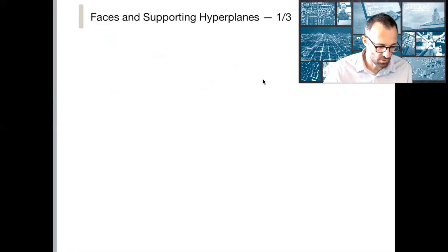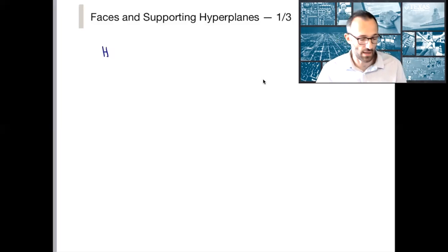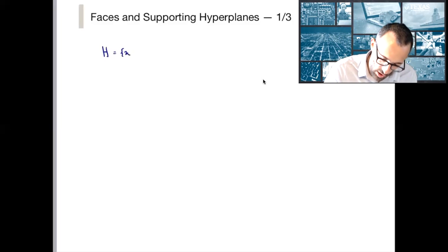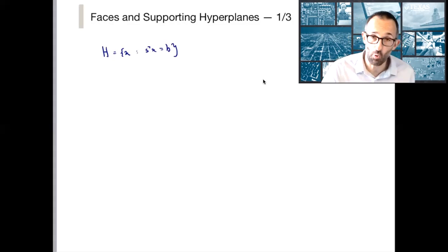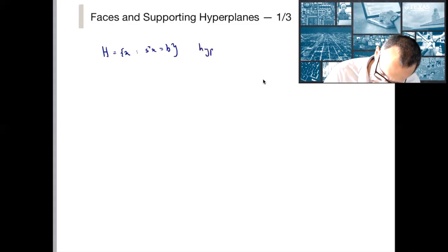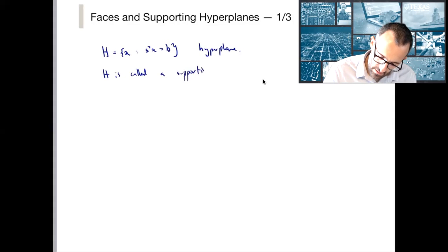So let's recall a few definitions. If h is a hyperplane, it's defined by a normal vector and by a scalar. So h is all x such that the normal vector s times x is equal to b. S is a vector, b is a scalar in this case. And this is called a supporting hyperplane.